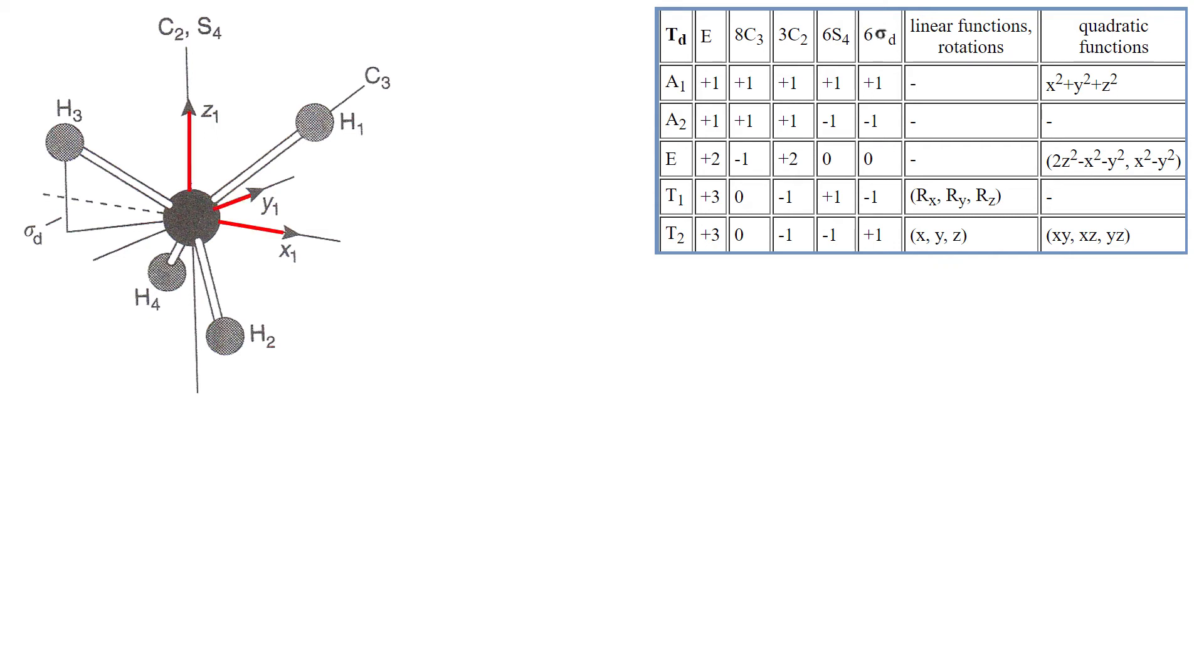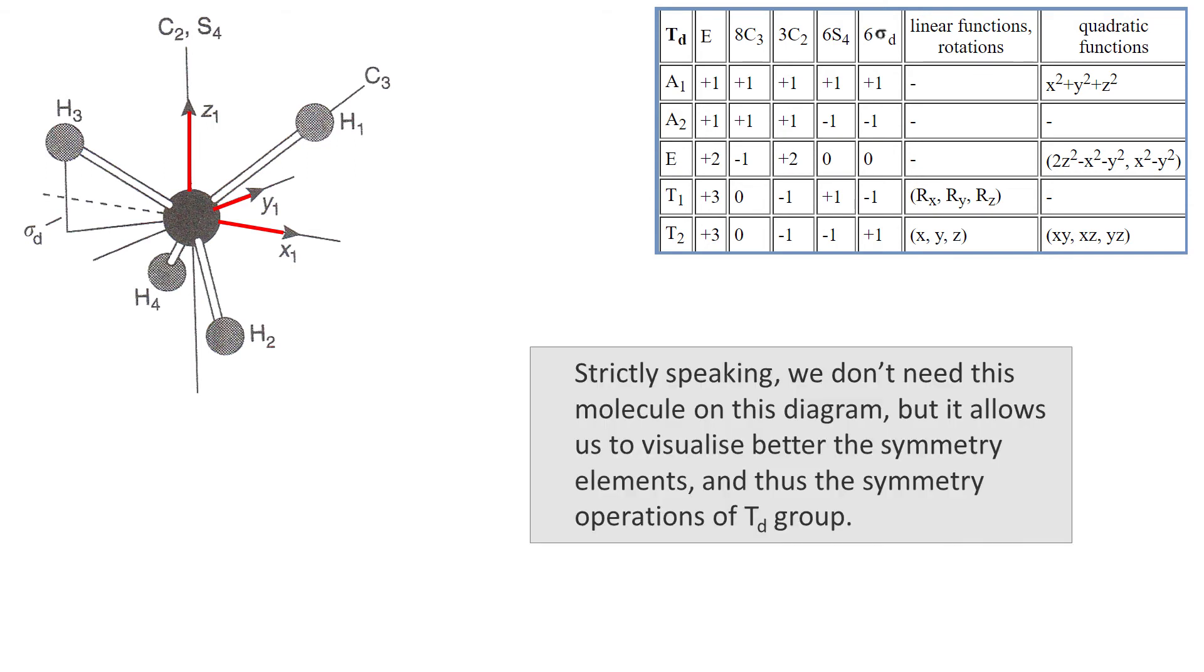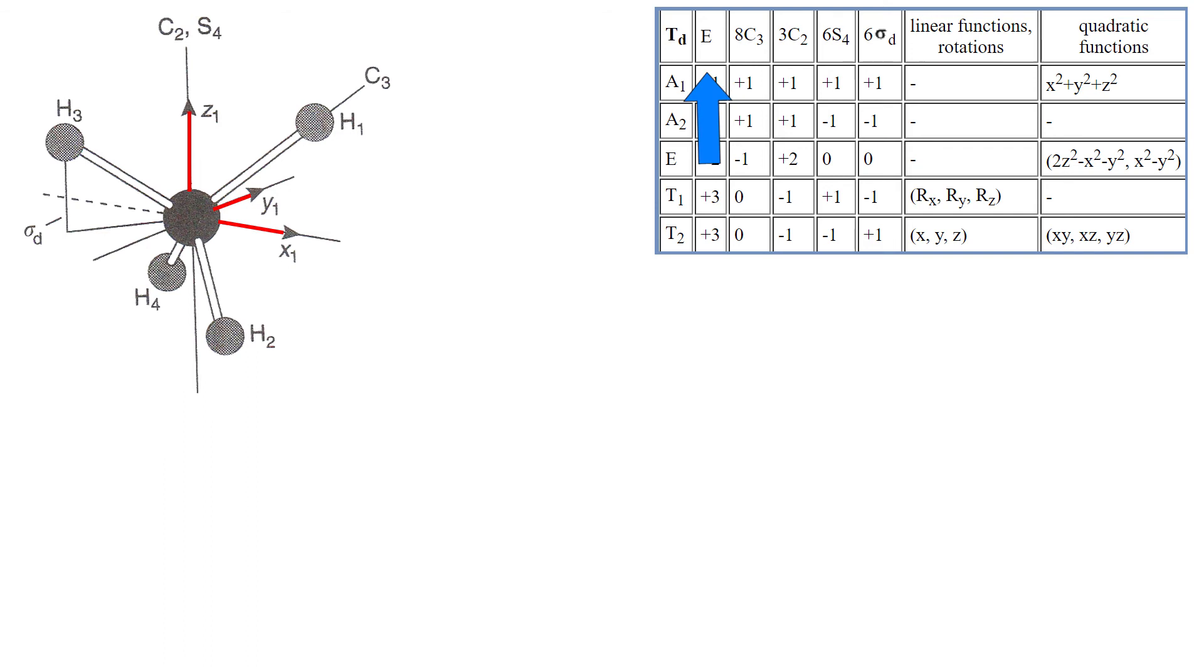So let's do some symmetry operations on these three vectors. Just before we start, I just want to emphasize that we don't need this molecule on this diagram. However, it does help to visualize the symmetry elements and therefore symmetry operations for TD group. That's why I left it here.